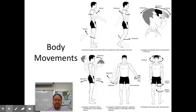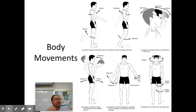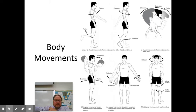"Ab" means away from, so with abduction you're going away from the midline of the body, and with adduction you're going toward the midline. Rotation can occur at pivot joints like in the elbow or at the axis — the second cervical vertebra. Circumduction happens at ball and socket joints, where you can have a small circle at the proximal end and a larger circle at the distal end.